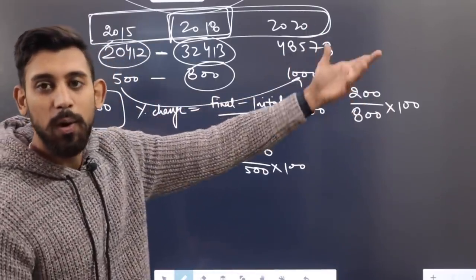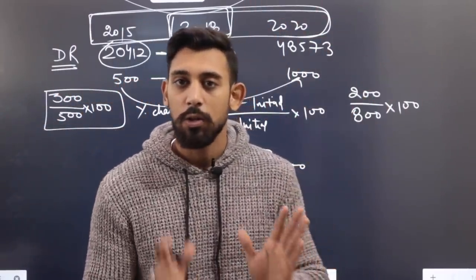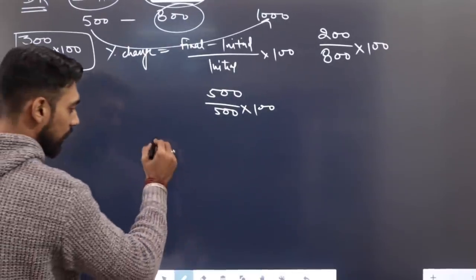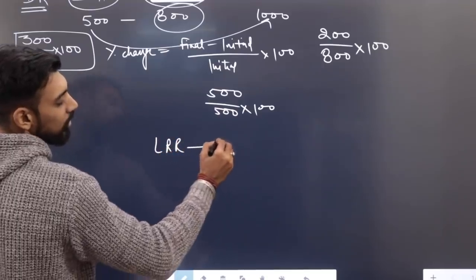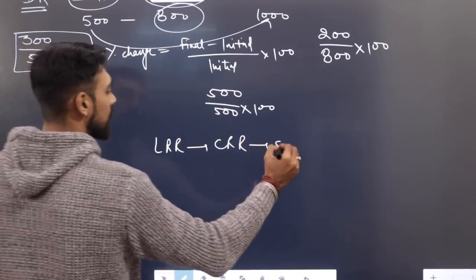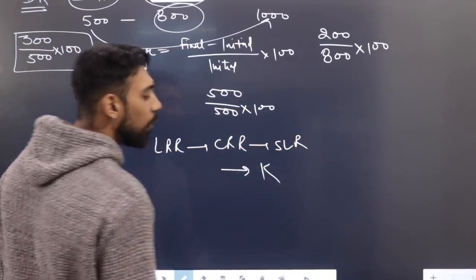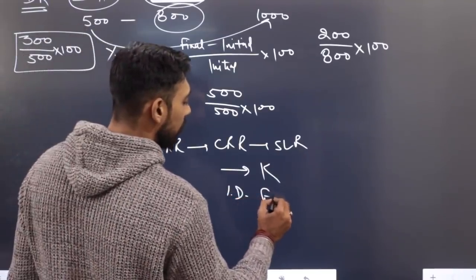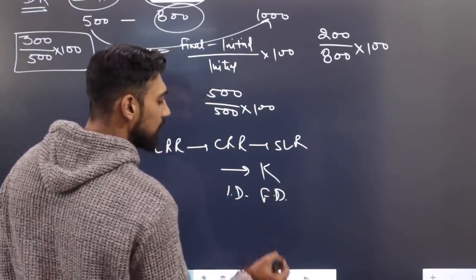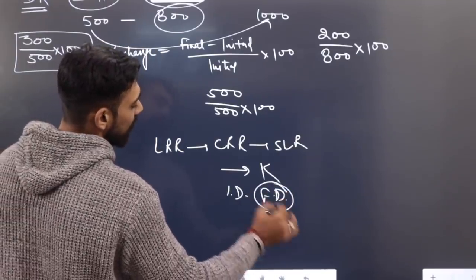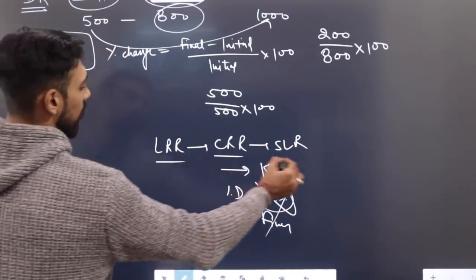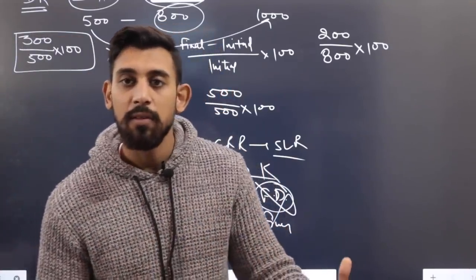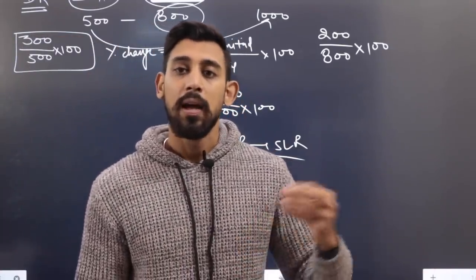You should know key Economics terms from the table: CRR (Cash Reserve Ratio), SLR (Statutory Liquidity Ratio), multiplier, ID (Initial Deposits), FD (Fixed Deposits). Also remember IPR — Industrial Policy Resolution. These kinds of terms are important to keep in mind.